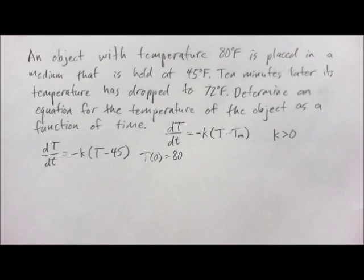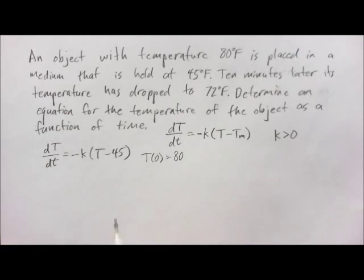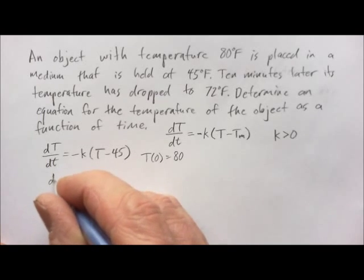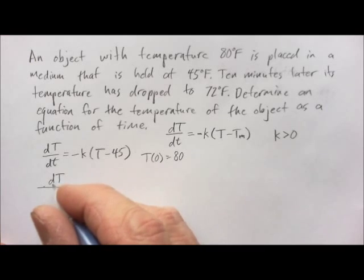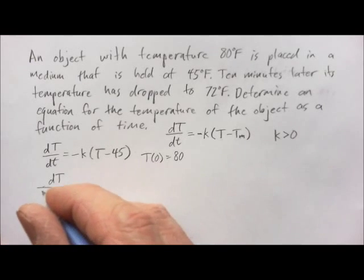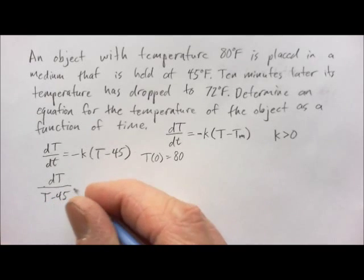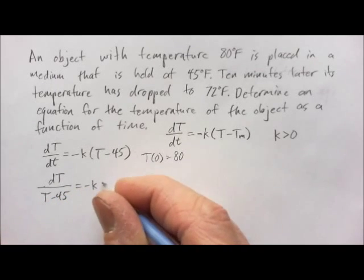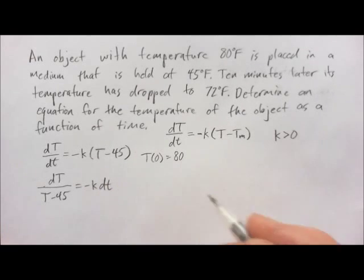And so, we want to solve that. We can solve it by separation of variables. You can also solve this using an integrating factor. Let's solve it by separation of variables this time. So, what we'll do here is we have dT. To separate the variables, we multiply both sides by the differential for time. So, we'll have little dt over here. And we divide by the temperature minus 45 to get this capital T over there with dT.